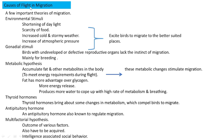What causes birds to migrate? Several theories explain this. The first involves environmental stimuli that prompt a bird to start migration. These stimuli include: shortening of daylight, scarcity of food, increased cold and stormy weather, and increased atmospheric pressure. All these things stimulate a bird to migrate to better-suited places.